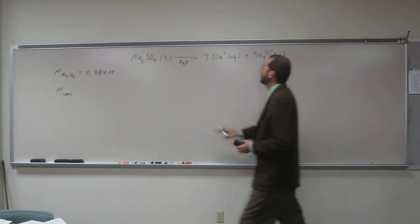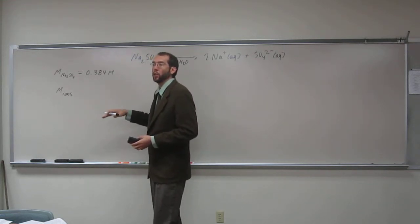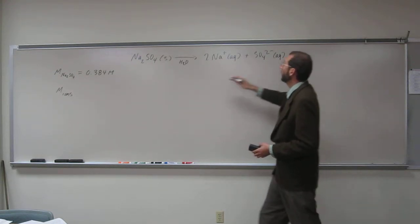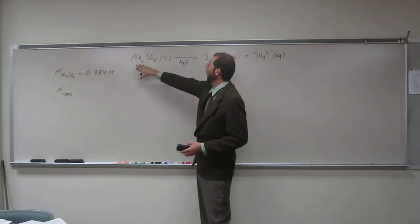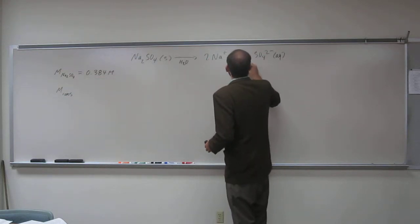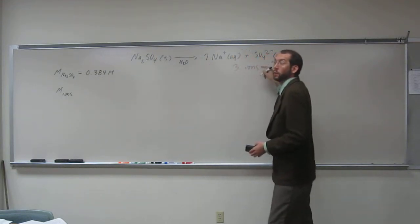So what you want to realize about this question is that it's saying the total number of ions. So if you look at this, for every one sodium sulfate, we make three ions, right? Because there's two of these and one of these.